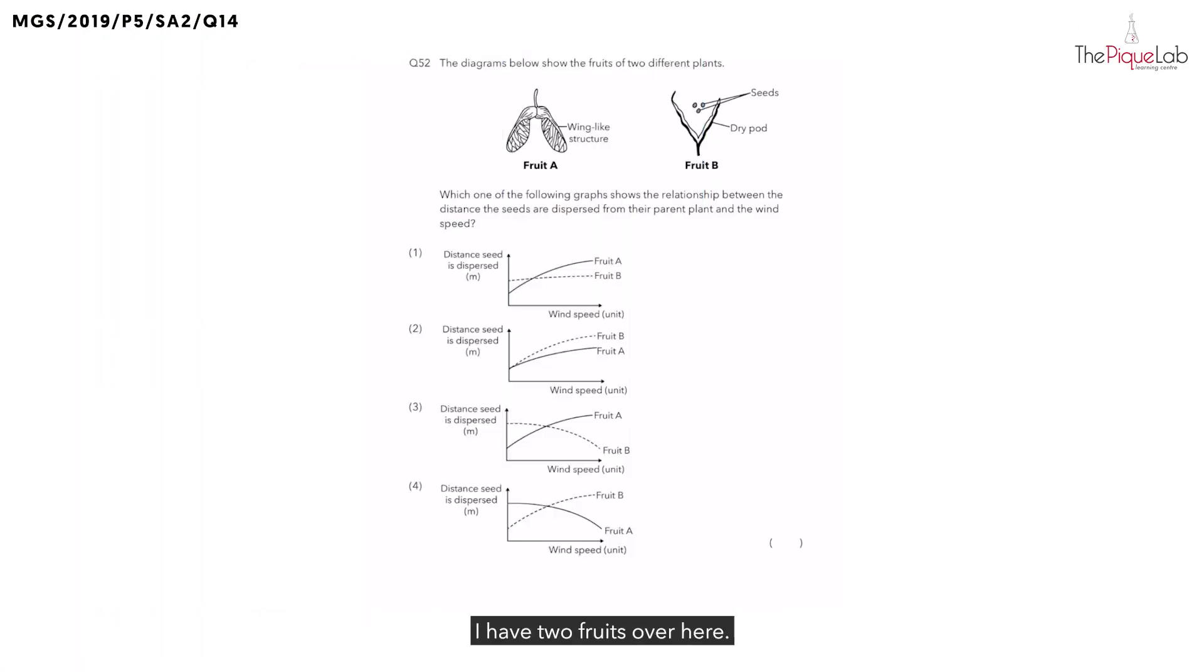Let's look at this question. I have two fruits over here. Fruit A has a wing-like structure while fruit B has a dry pod. So when it comes to this kind of question, what I would like all of you to do is to immediately write down the dispersal method of each fruit.